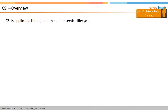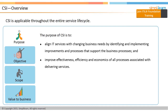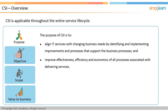CSI is applicable throughout the IT service life cycle. The primary purpose of CSI is to continually align and realign IT services to changing business needs by identifying and implementing improvements supporting business processes to IT services. These improvement activities support the life cycle approach through service strategy, service design, service transition, and service operation.